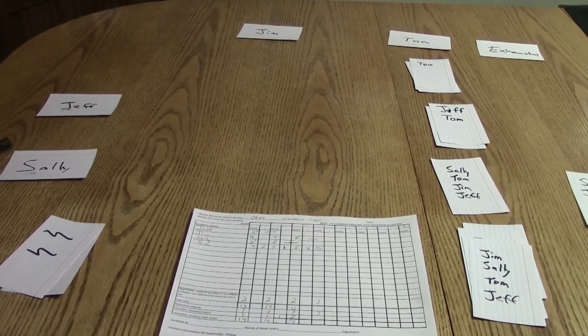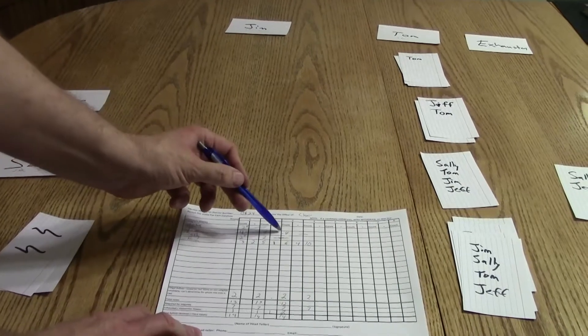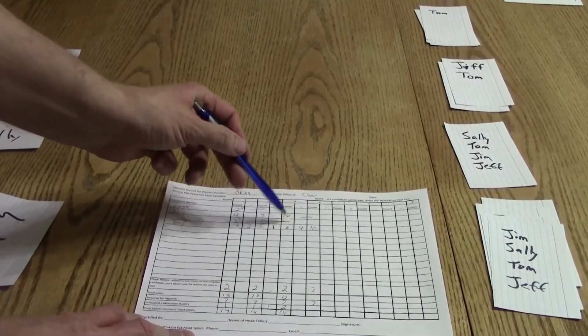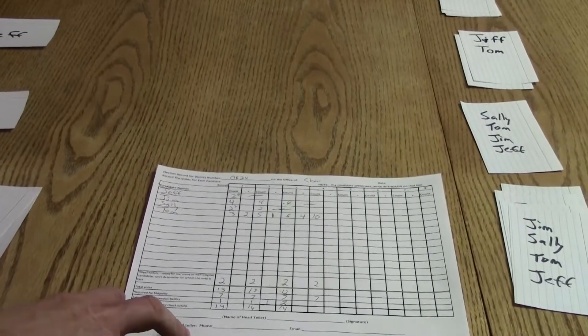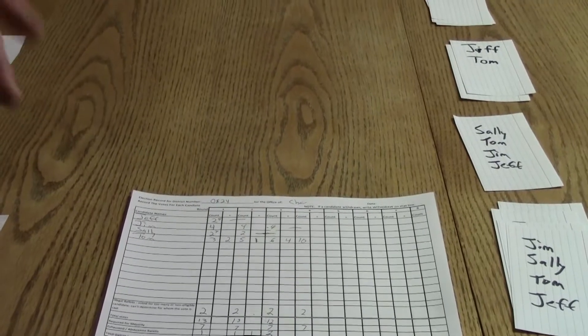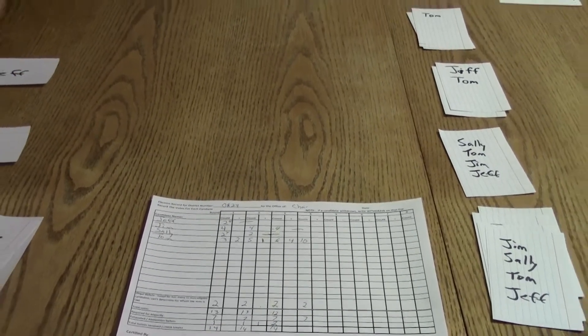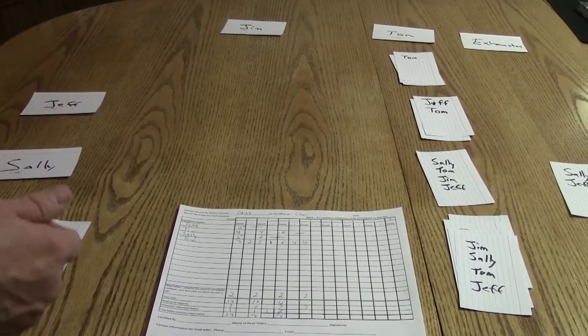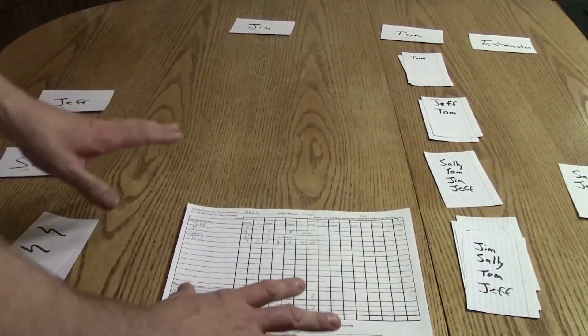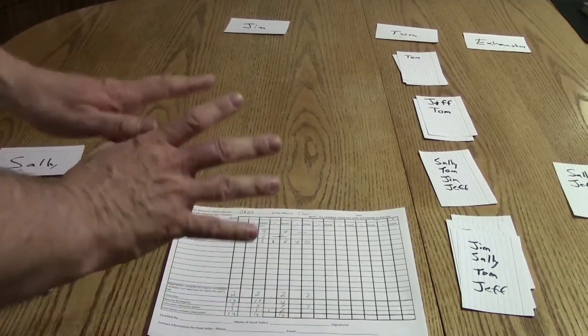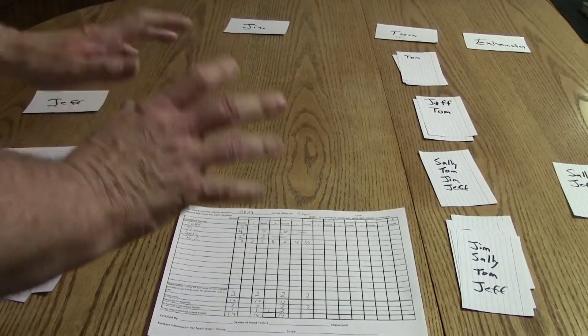Sometimes it works out that the person who is in second place would become the other delegate. But it doesn't always work that way because of people's second choices. So everyone who voted for Tom, they had a second preference on their ballot. So now that we've elected Tom, what I'm going to do is put everything back to the beginning. We're going to do the whole process again, only we're going to eliminate Tom.